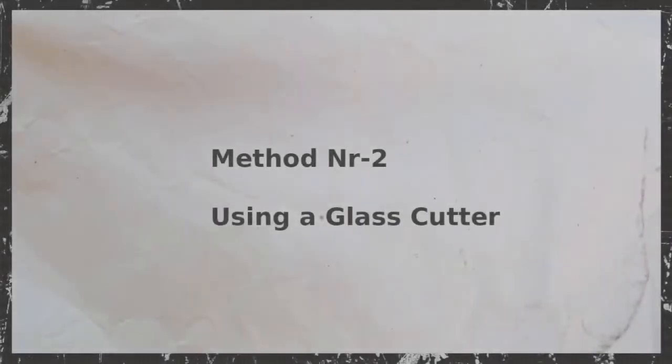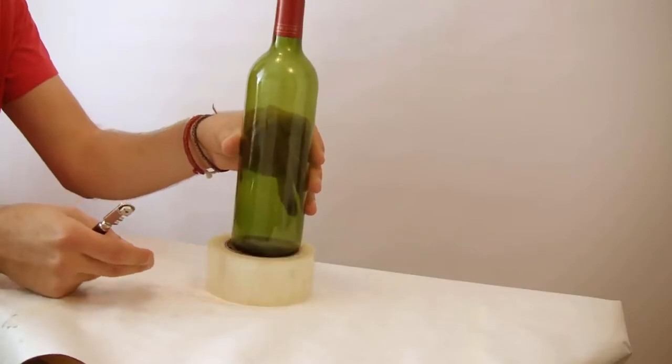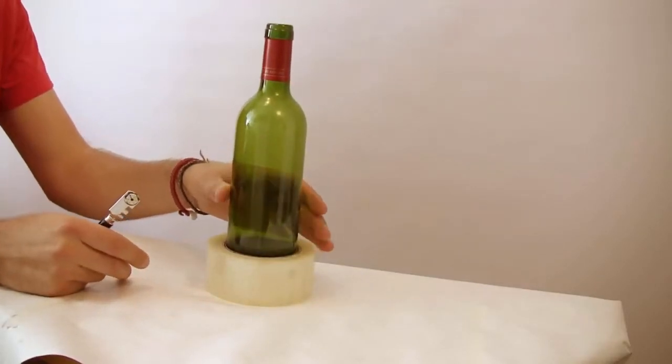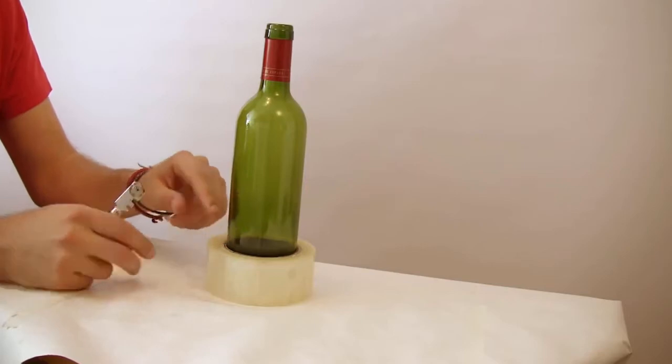If you want a better cut and you want to be able to adjust the point of fracture, you can use an ordinary glass cutter and duct tape or any other tape that fits your bottle.